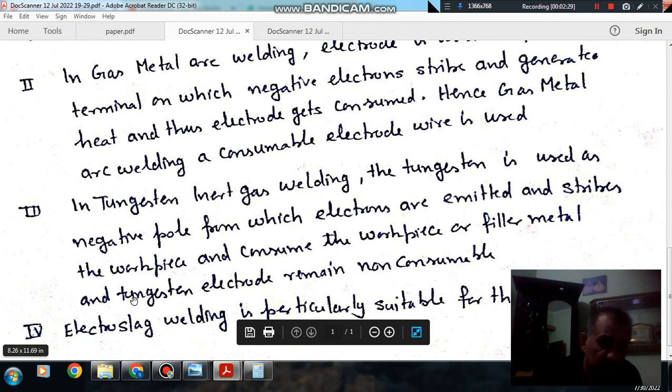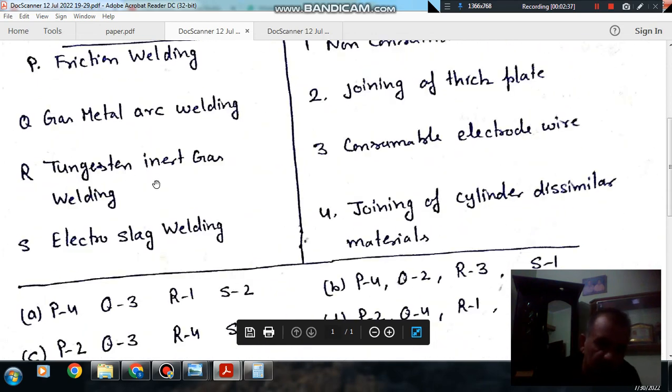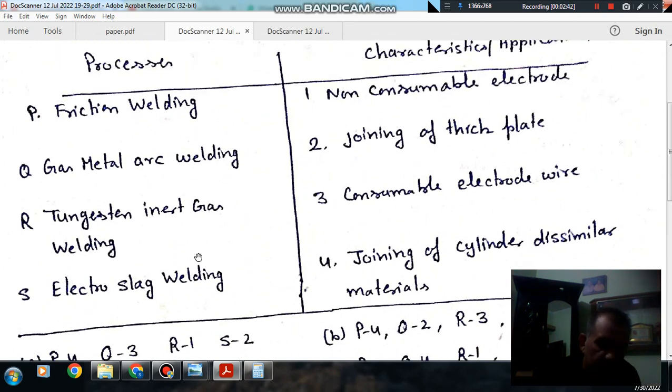So the workpiece gets consumed, but electrode doesn't get consumed. So electrode is non-consumable. So R is 1, non-consumable electrode.